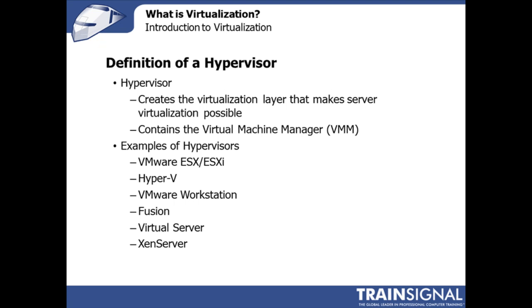The hypervisor creates the virtualization layer and makes server virtualization possible. It contains what's called the virtual machine manager, or VMM, whose job is to manage multiple virtual machines running on a single virtual host. Examples of hypervisors include VMware ESX and ESXi, which are part of VMware vSphere; Microsoft Hyper-V; VMware Workstation; VMware Fusion, which runs on the Mac operating system; Virtual Server; and Zen Server. I'll be going into these in more detail throughout this training course.